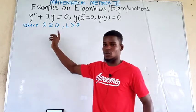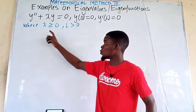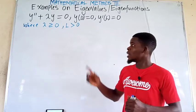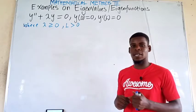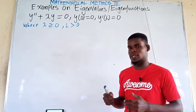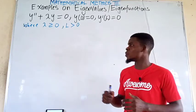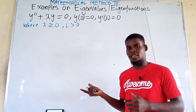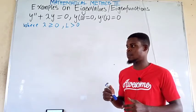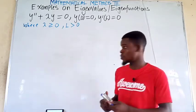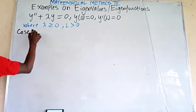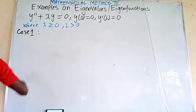We consider this as case 1 and case 2: case 1 when lambda equals 0, and case 2 when lambda is bigger than 0. In this particular example, lambda equals 0 will still not be an eigenvalue — it will give us a trivial solution — but let's look at it before moving to case 2.